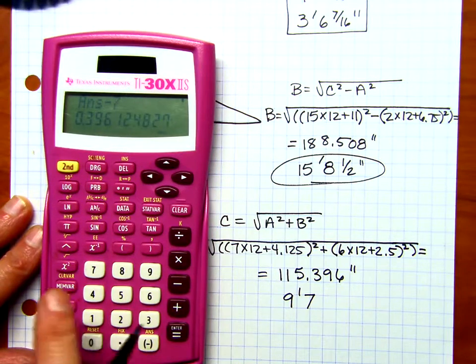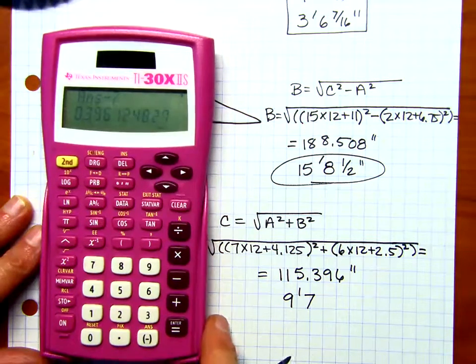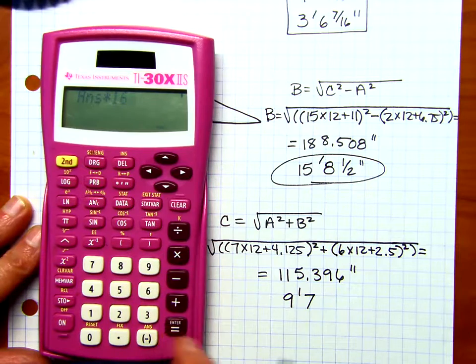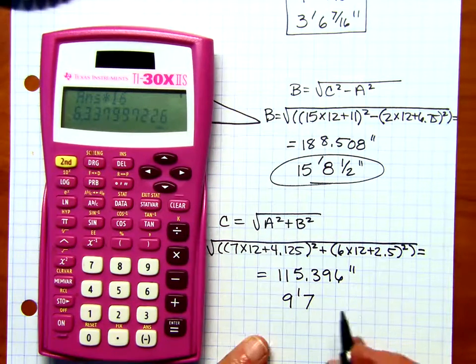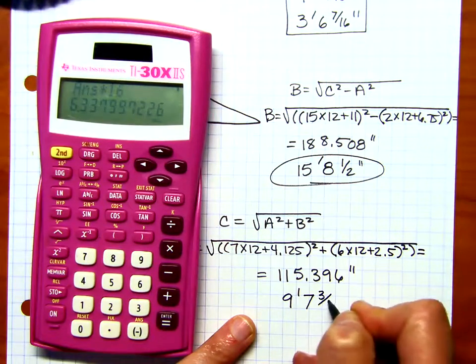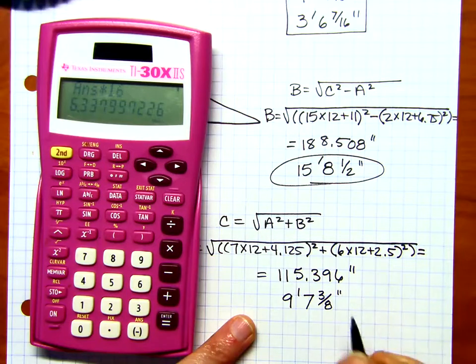Okay. Now, 0.396, that's a little bigger than 3 eighths. Let's see what we get. So, times 16, and we get 6.3, or 6 sixteenths. Now, 6 sixteenths can be reduced to 3 eighths. So, that was pretty close to what I said. All right. And that is going to be our answer.